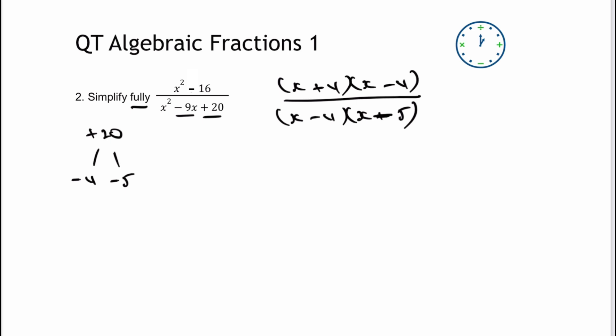Now if we have a look at that particular fraction I can divide top and bottom by x minus 4, so therefore the final answer is going to be x plus 4 over x minus 5 and that would be the answer to that particular question.